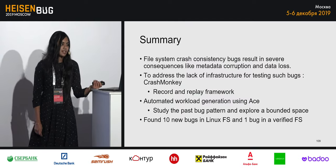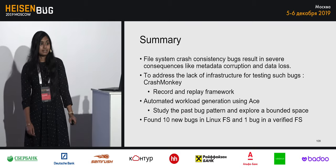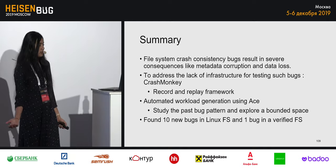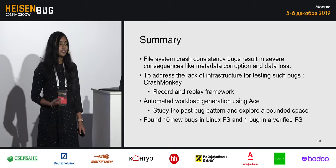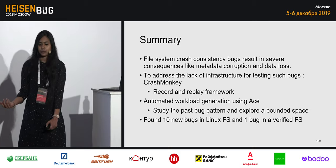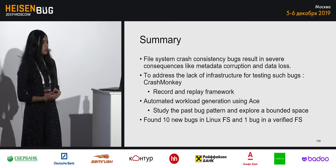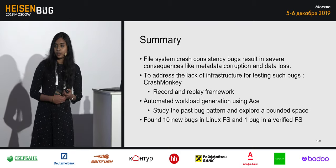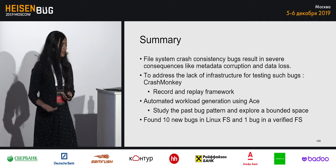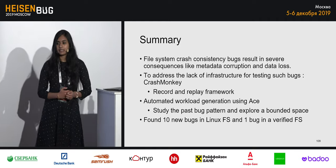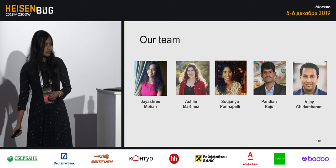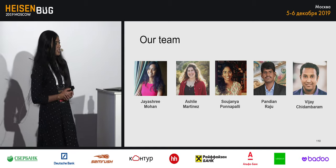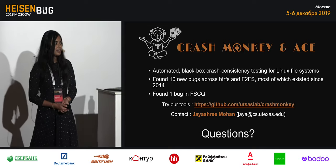To summarize: file system crash consistency bugs can result in severe consequences ranging from metadata corruption and data corruption to the file system being completely unusable. To address the lack of infrastructure for testing crash consistency bugs, we built CrashMonkey. To address the need for an automated workload generator, we built ACE. We studied the pattern of previously known bugs to guide bound selection for ACE. Using these techniques, we were able to find 10 new bugs in Linux file systems and a bug in a verified file system. CrashMonkey and ACE is a collaborative effort of students at UT Austin and our advisor, Professor Vijay Chidambaram.